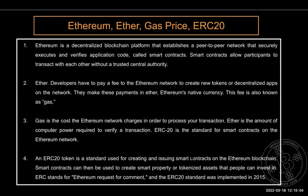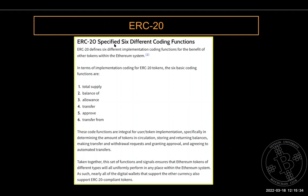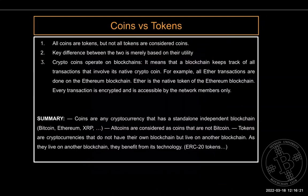ERC20 is different from ETH — it's a token standard to create and issue smart contracts. ERC20 provides coding functions for smart protocols. Specifically, ERC20 tokens require six properties: a total supply function, a balance function, an allowance function, a transfer function, an approve function, and a transferFrom function. These functions must be deployed in all smart contracts that use this protocol.